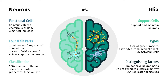Glial cells can also be classified in many ways, with astrocytes, oligodendrocytes, and microglia being primary ones in the CNS, and Schwann cells being a primary one in the PNS. Neurons have synapses, axons, dendrites, and generate electrical activity, whereas glial cells do not, but glial cells can replicate themselves.